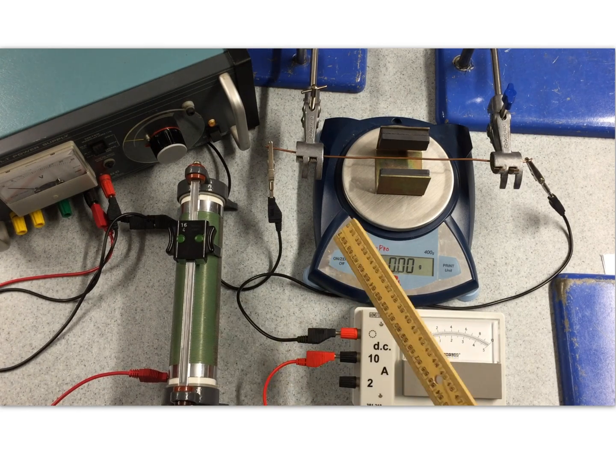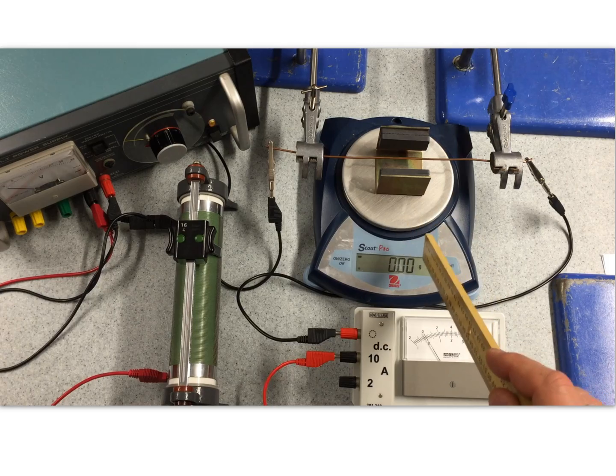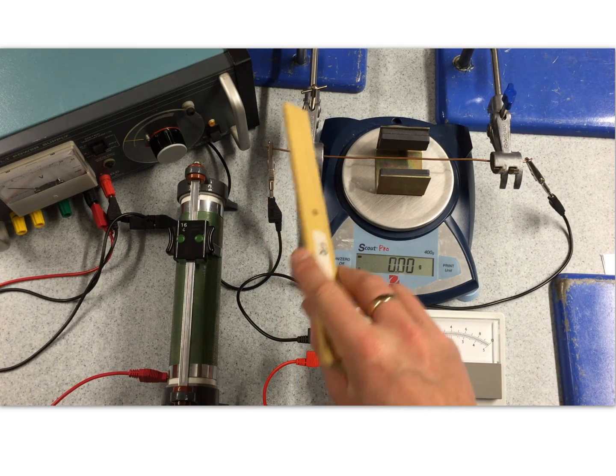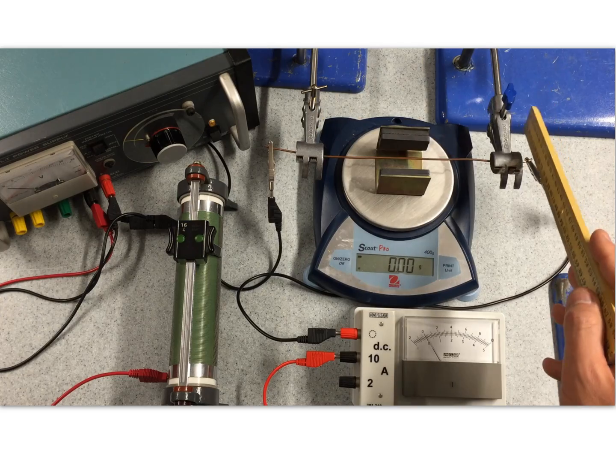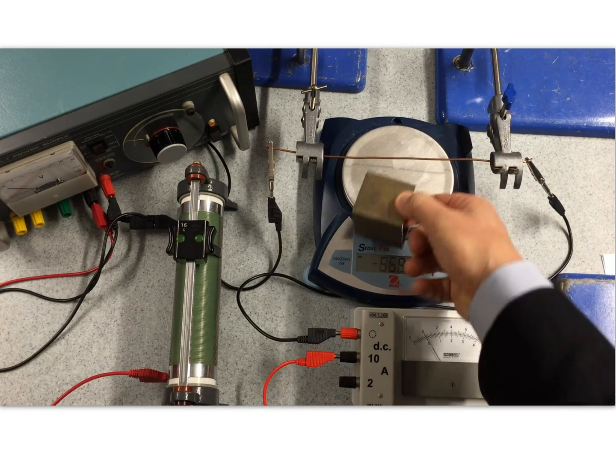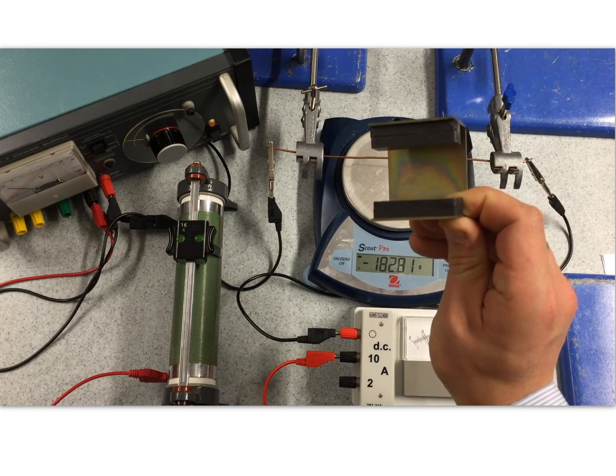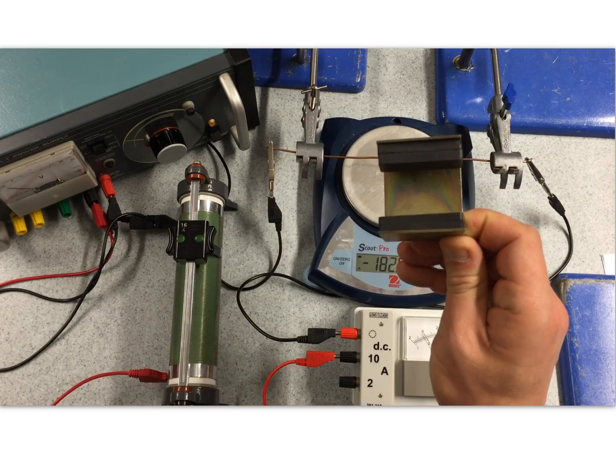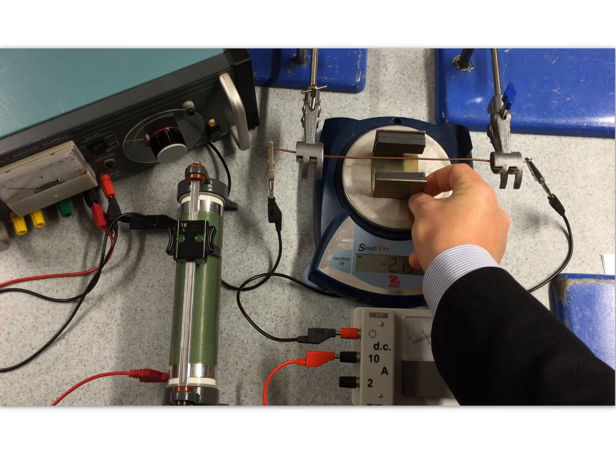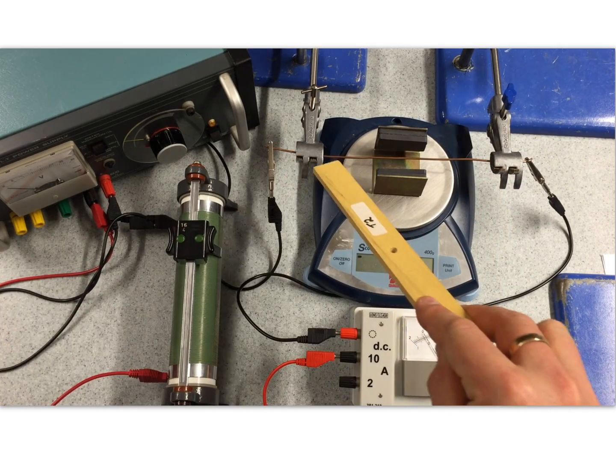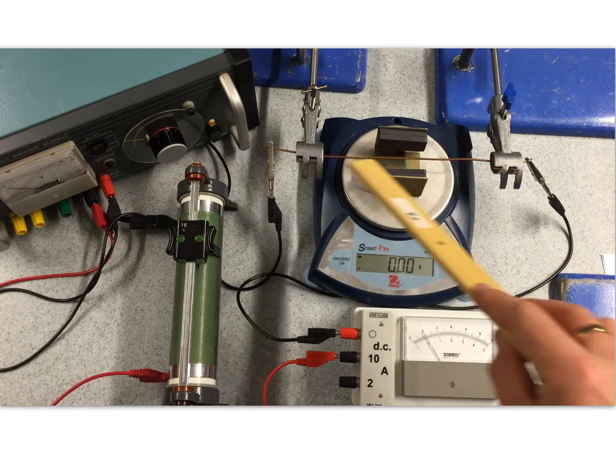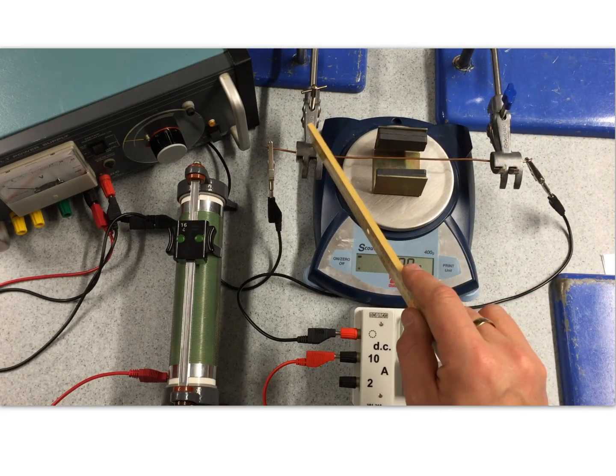Okay, here is the experimental setup. I have my top pan balance, and I have my piece of copper wire that's suspended from these two clamps that runs through these magnets and a brace. I've doubled up the magnets on both sides,